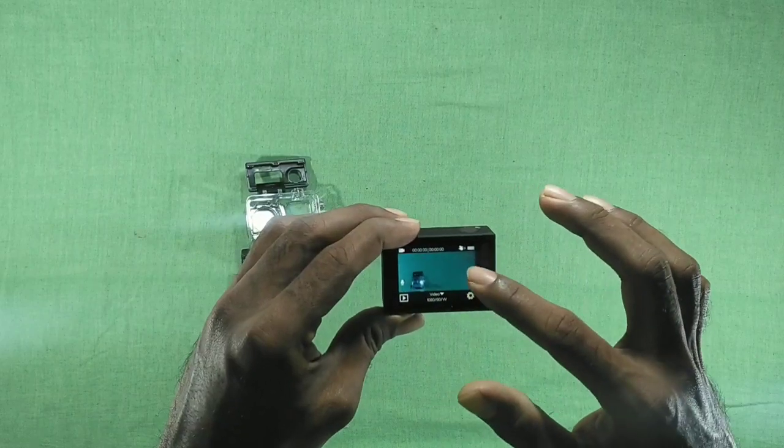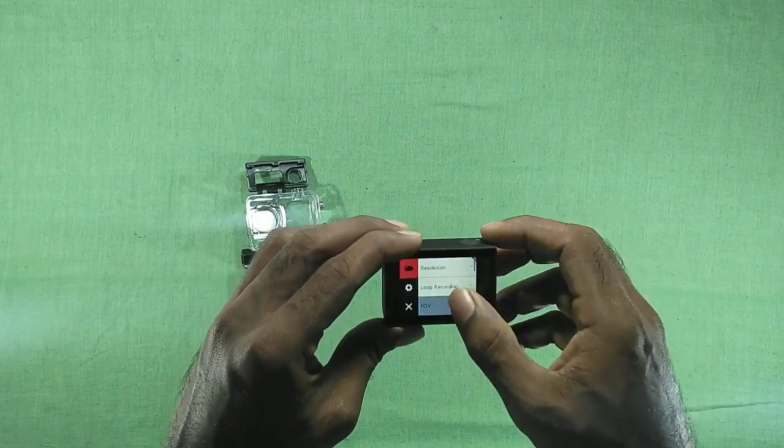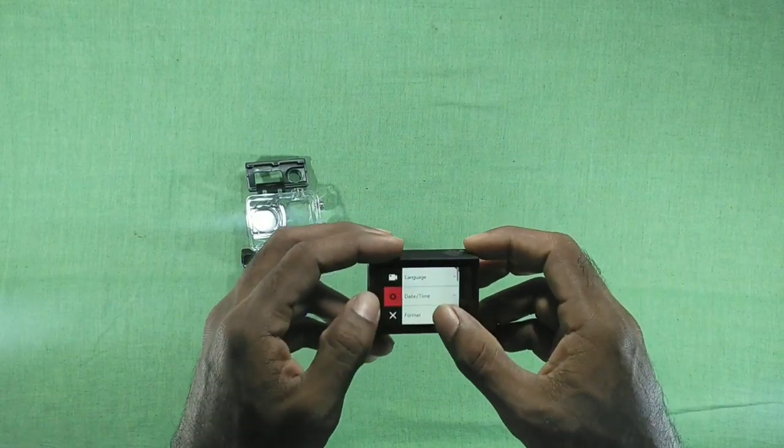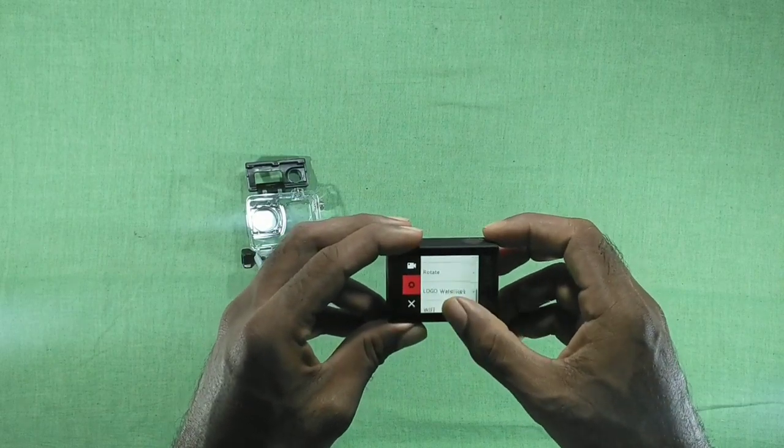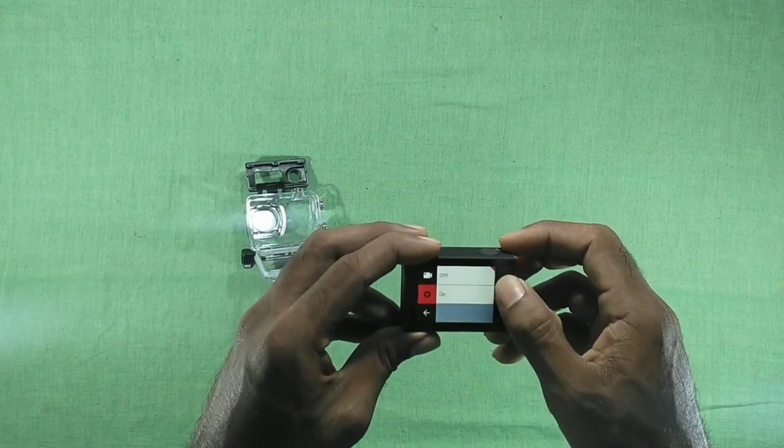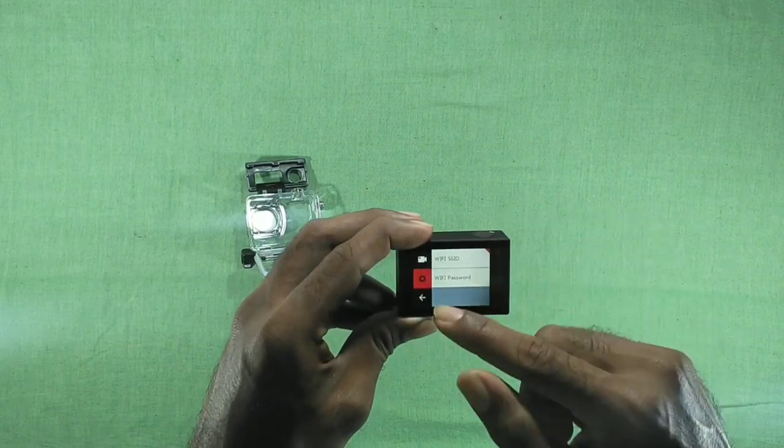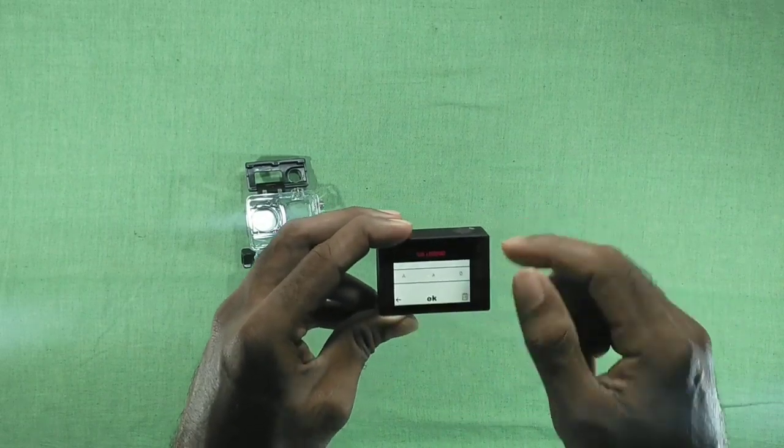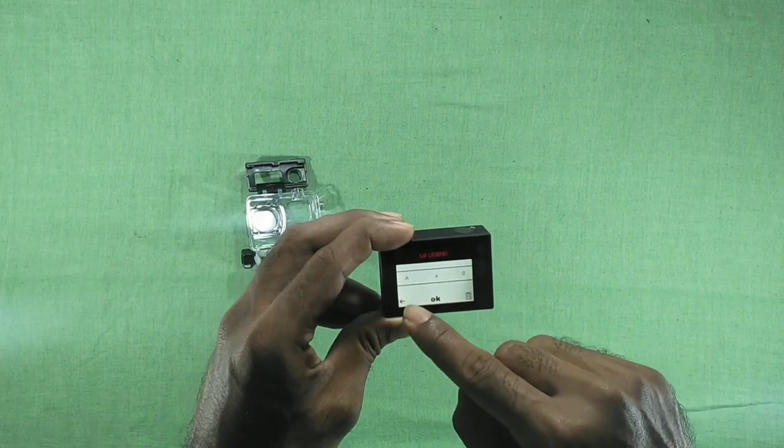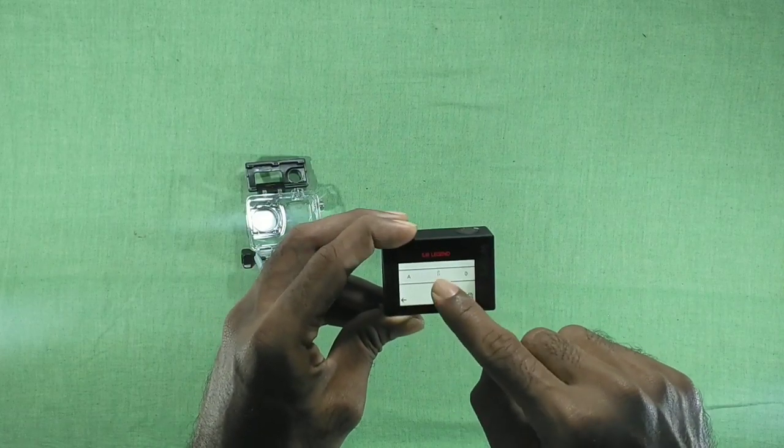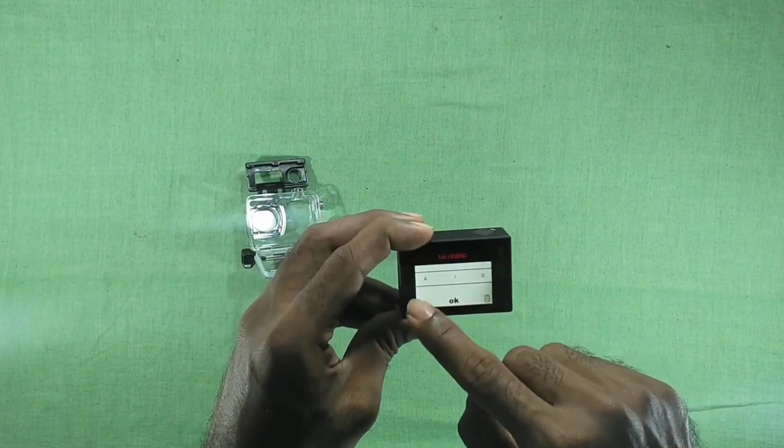We also got some keypad sounds and brightness level of the display in the settings itself, so we can adjust the brightness. We also got logo watermark—that means it will show the SJCAM logo in the video. It also has a couple of options for enabling WiFi and for changing the password of the WiFi.